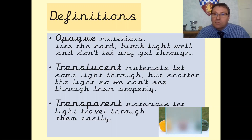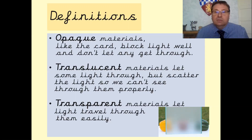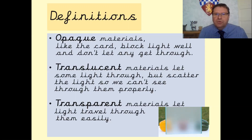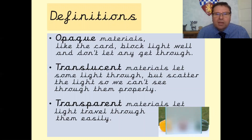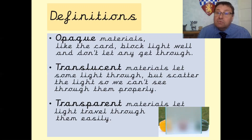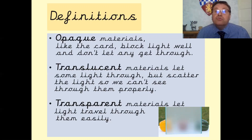Translucent. Materials that let sunlight through but scatter the light so you can't really see through it properly are called translucent. They have a very special property and they are very useful for very specific things. That word is translucent.